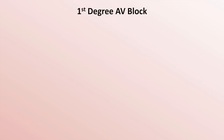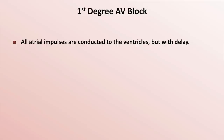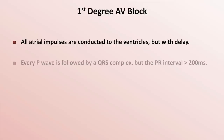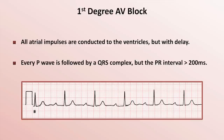The simplest form is first degree block. In first degree block, all atrial impulses are conducted to the ventricles but with delay. Therefore, every P wave is followed by a QRS complex, but the PR interval is greater than the normal 200 milliseconds. Here's an example of first degree block. Notice the one-to-one correlation between P waves and QRS complexes — every P wave gets conducted and the PR interval is constant. However, that constant PR interval is prolonged; in this case, it's about 320 milliseconds.